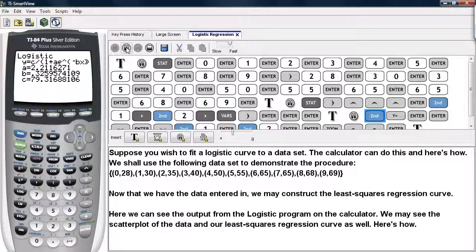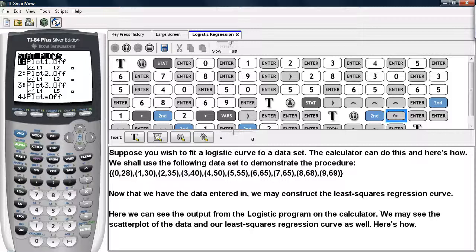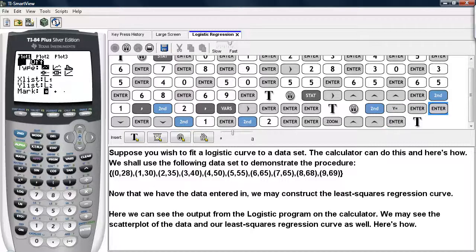We'll do that by hitting second Y equals, which brings up the stat plots menu. We'll turn it on and select the scatter plot option, the first one here.